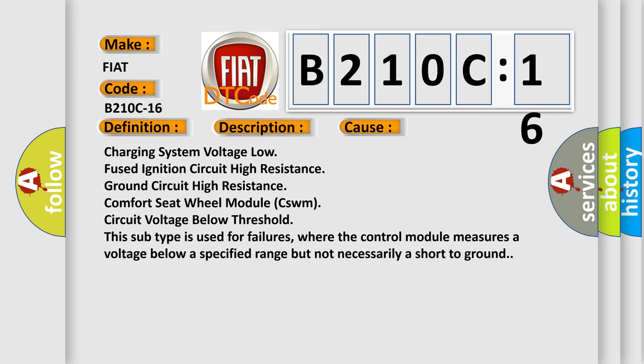Charging system voltage low, fused ignition circuit high resistance, ground circuit high resistance, comfort seat wheel module CSWM circuit voltage below threshold. This subtype is used for failures where the control module measures a voltage below a specified range but not necessarily a short-to-ground.